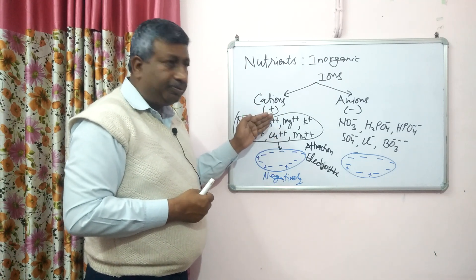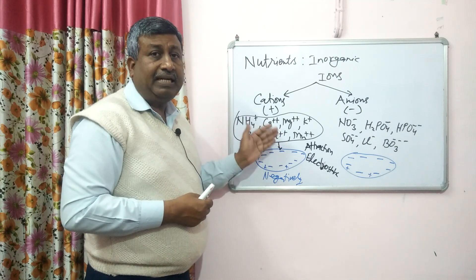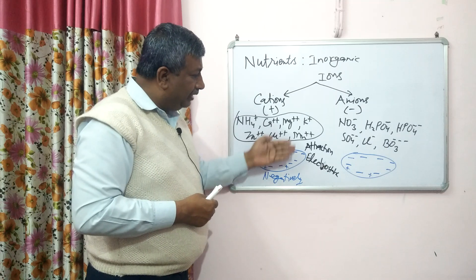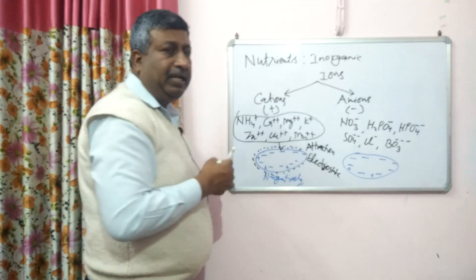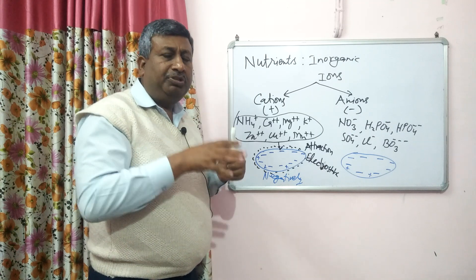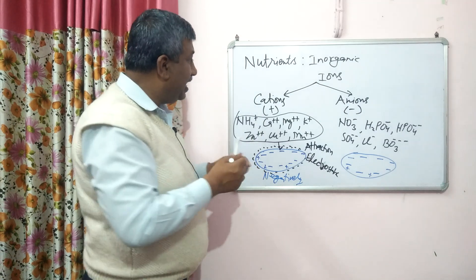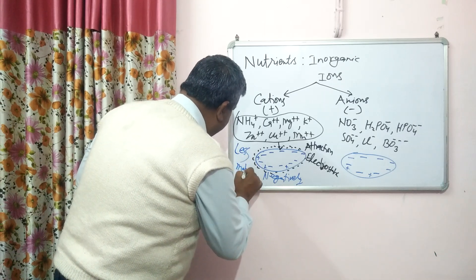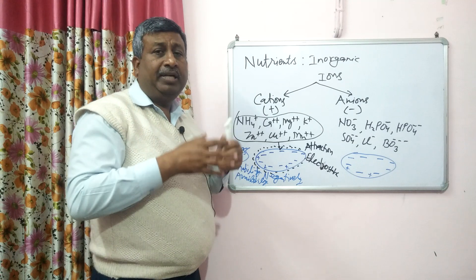There is a dynamic equilibrium between the soil solution and clay particles, which is known as cation exchange. Because of this cation exchange, most cations are held on clay particles and only a small amount remains in the soil solution. As water moves through the soil, cation mobility is reduced, and therefore their availability to plants is also less.